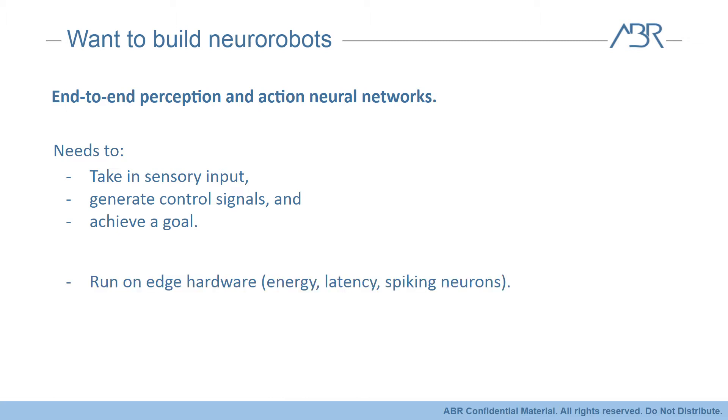Additionally, for embedded brains, running on edge hardware is a huge plus because we get big savings on energy and reduce the response latency, which can directly affect performance in neurorobotic applications. And running our network on some of the really efficient edge hardware may require implementing our networks in spiking neurons.